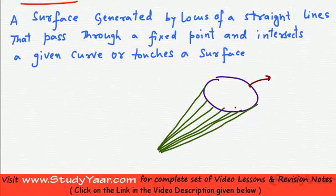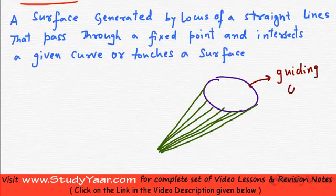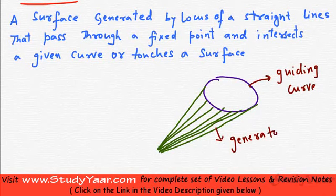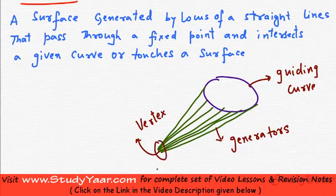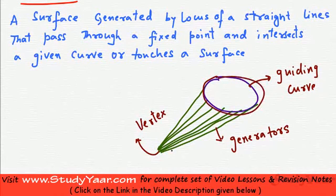This curve is known as the guiding curve. These lines are known as generators, sometimes also referred to as generatrix. This fixed point is known as the vertex, sometimes also referred to as apex. So this is a cone — a set of lines which pass through a fixed point and intersect a given curve.